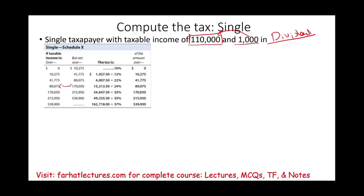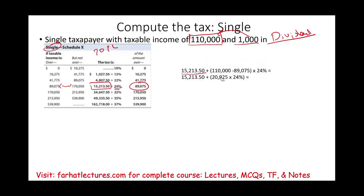This individual falls within the range of $89,075 to $170,050 for 2022 single filers. The taxes are $15,213.50 plus 24% of the amount above $89,075. So: $15,213.50 plus ($110,000 − $89,075) × 24% = $15,213.50 plus $20,925 × 24% = $15,213.50 plus $5,022, giving a total tax bill of $20,235.50. Now we cannot forget about the dividend.